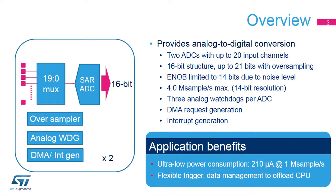There are up to 20 analog inputs available across the three ADCs. The ADC module itself is a 16-bit successive approximation converter with additional oversampling hardware. Due to the noise level, only 14-bit equivalent performance is achieved. To have more than 16-bit performance, it is necessary to use oversampling methodology. Under certain conditions, the oversampled output can have a 21-bit result.